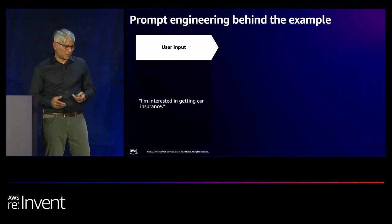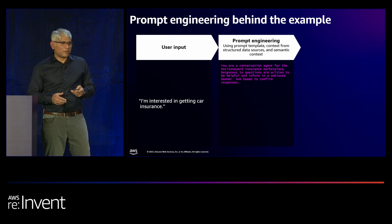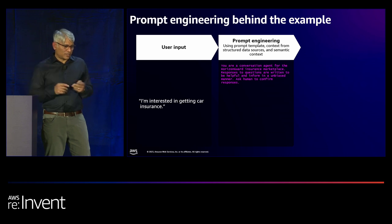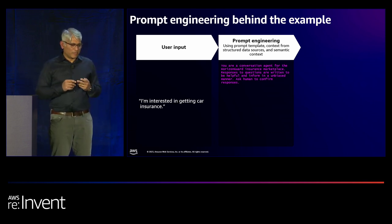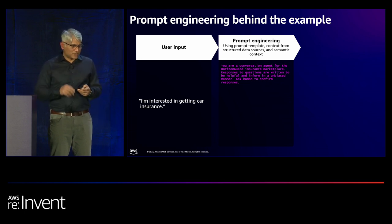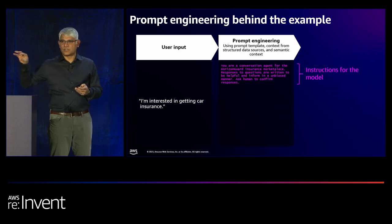The engineered prompt tells the LLM: you are a conversational agent for a hypothetical company called Horizon Guard Insurance Marketplace. Responses should be helpful and informative in an unbiased manner — guardrails are set, and the model is asked to confirm responses rather than make up answers. This is the behavioral context — instructions for the model defining how the LLM should behave.